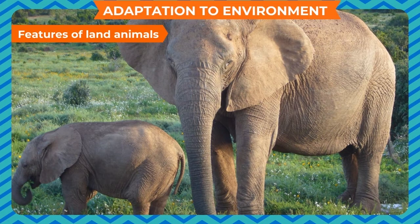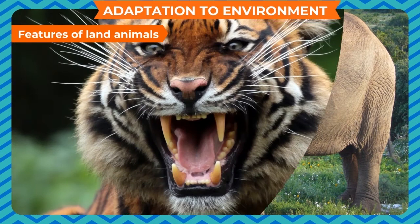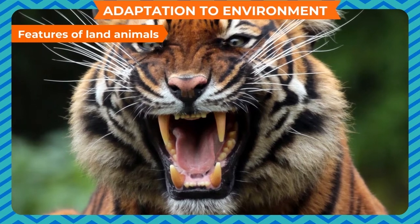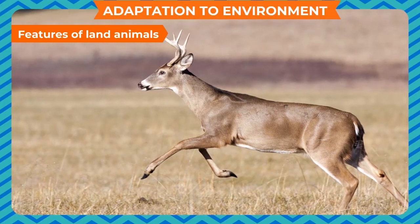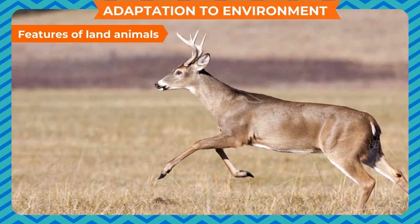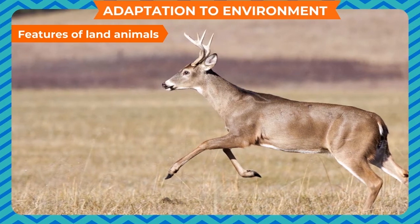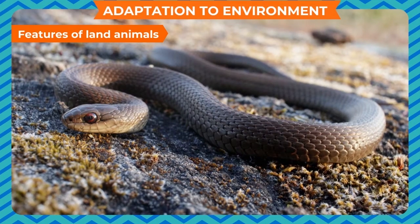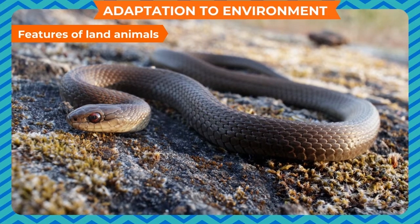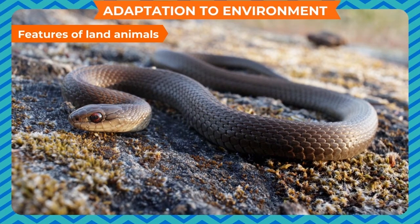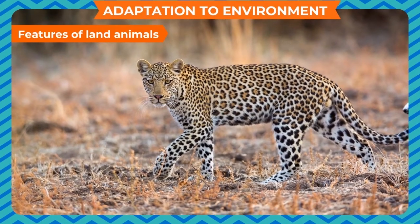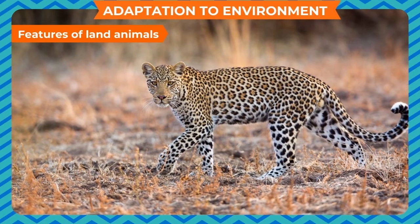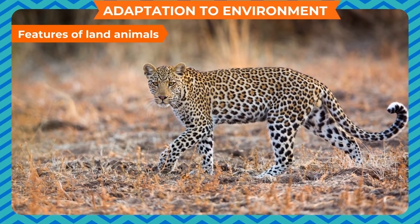Features of land animals: They have lungs to breathe air. Many of them have sharp teeth and claws to catch their food. Most of them have well-developed legs to move and run fast to protect themselves from predators. Some animals such as snakes do not have legs, but they have scales that help them in crawling. They have well-developed sense organs to help them look for food and to feel changes in their surroundings.